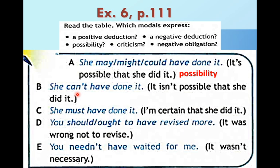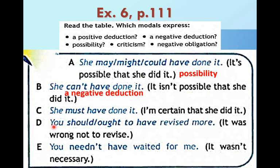Can't может быть не только в значении 'не уметь'. Если мы хотим выразить 'невозможно' или по-русски 'не может быть' — she can't have done it — не может быть, чтобы она это сделала. Это негативное умозаключение. So it's a negative deduction.